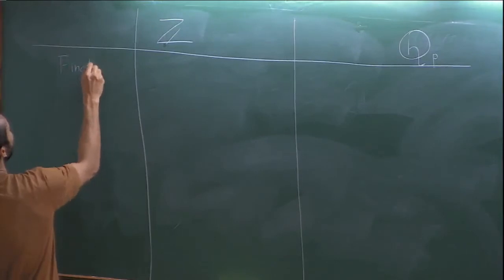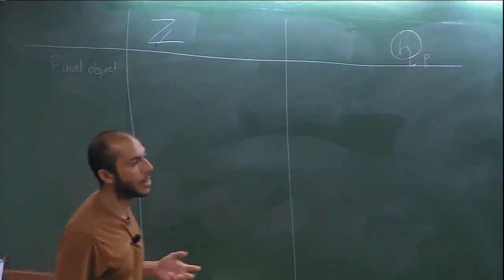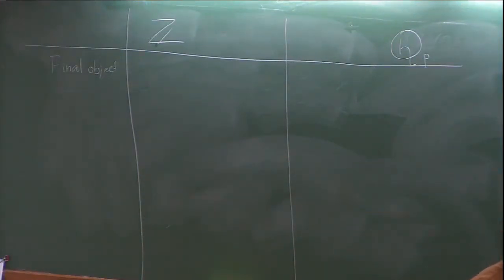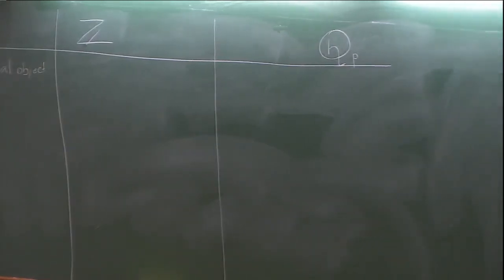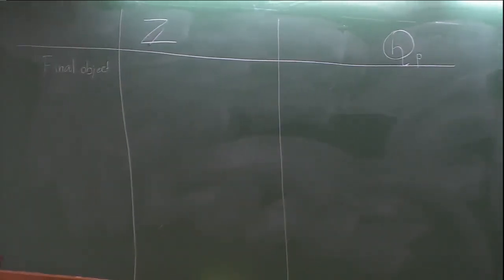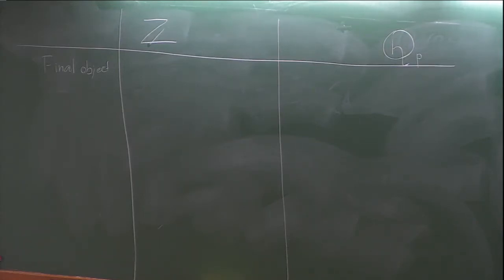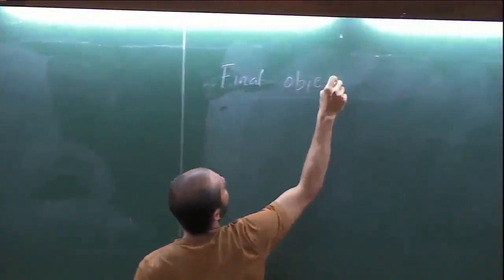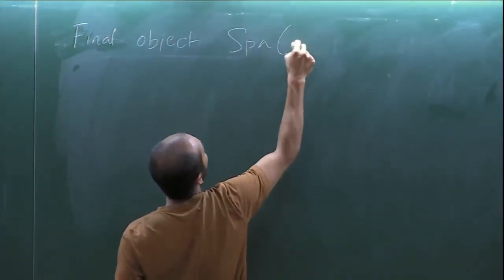The first example is the final object. The final object in any category is an object to which there is a unique morphism from any object. The final object in the category of adic spaces is spa(ℤ, ℤ).